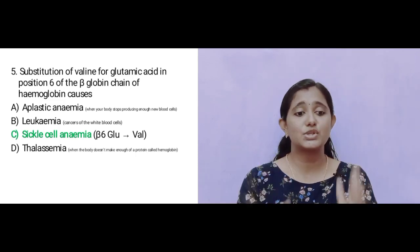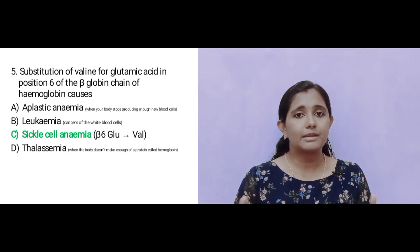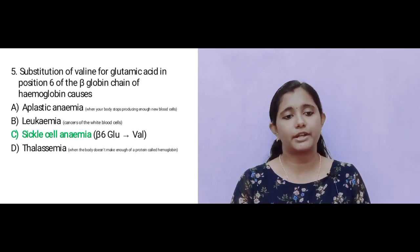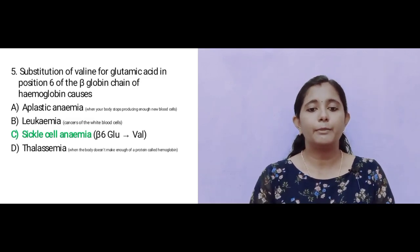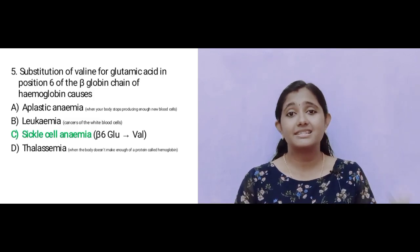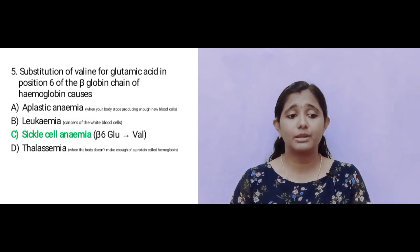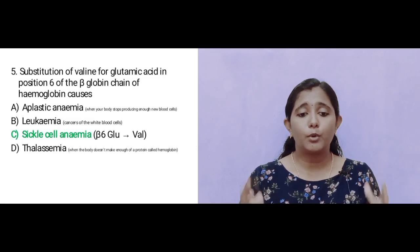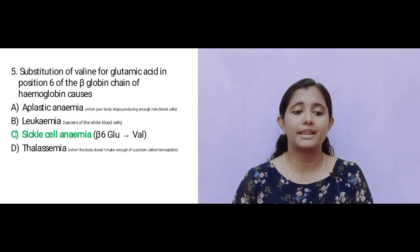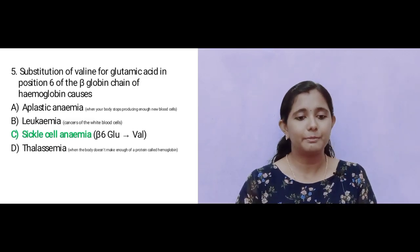The answer is Option C: Sickle Cell Anemia. The valine-for-glutamic-acid substitution at the 6th position of the beta-globin chain is the defining mutation of sickle cell anemia. Aplastic anemia is when the body stops producing new blood cells; leukemia is cancer of white blood cells; thalassemia involves defective synthesis of hemoglobin protein chains.